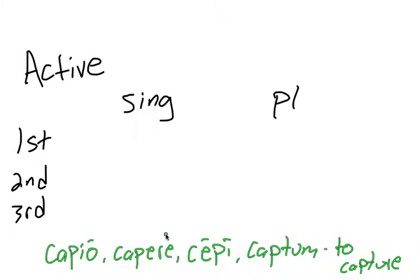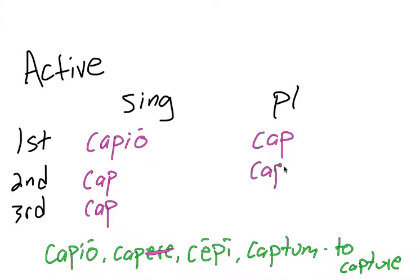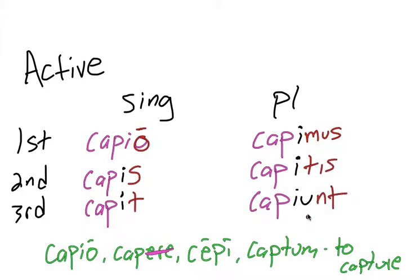Since it's a third conjugation verb, we're going to take away the whole e-r-e and have a consonant stem like we did with third conjugation. But remember our first principal part is also our first person singular in the active, so capio. Then I have my consonant stem, and I'm going to add in i's, and when I get to the third plural I'm going to add in an i and a u. Now I'll add in my endings: capio, capis, capit, capimus, capitis, capiunt.